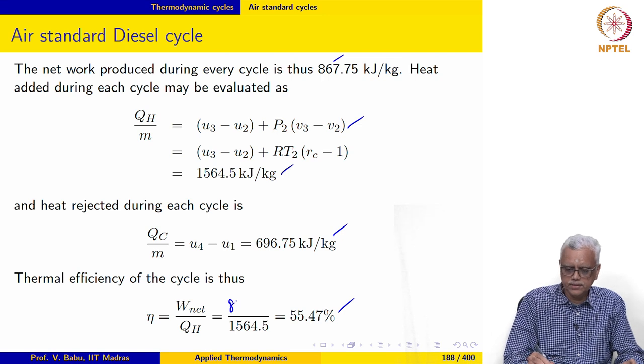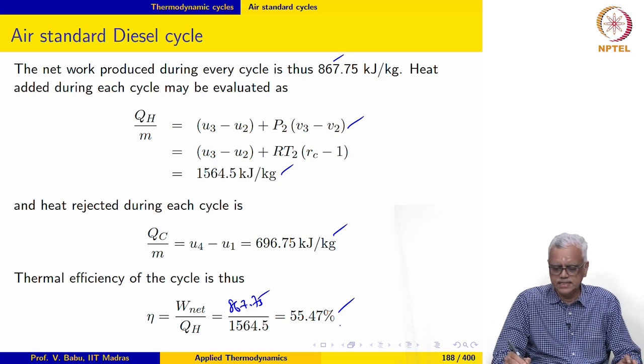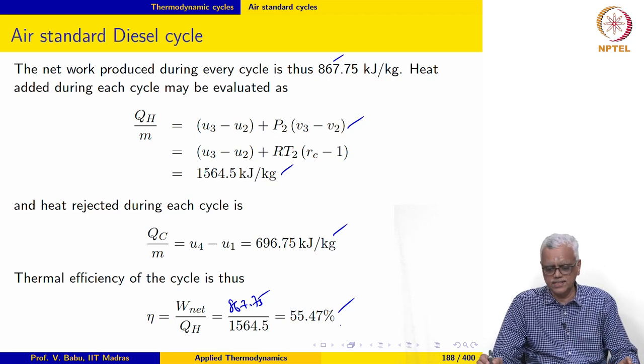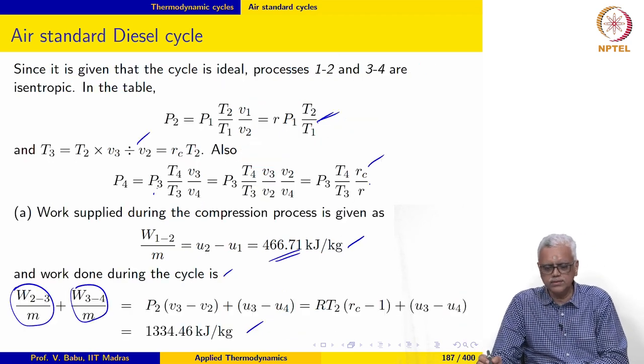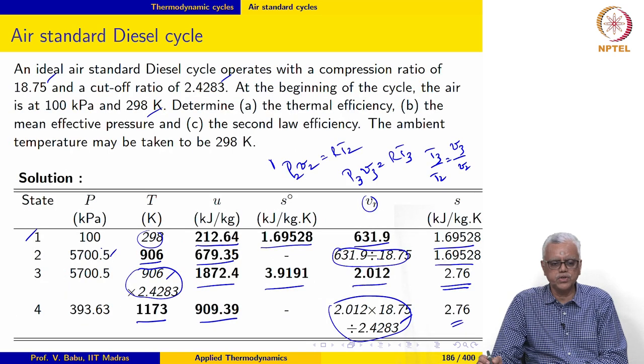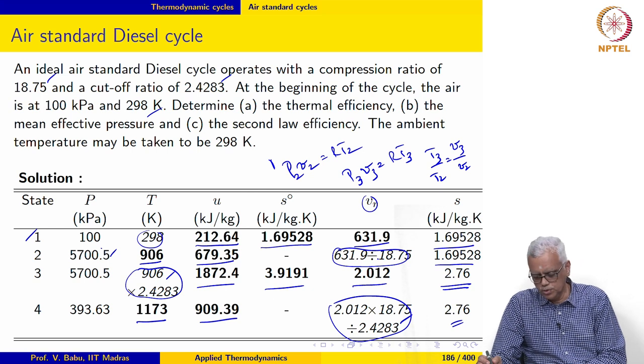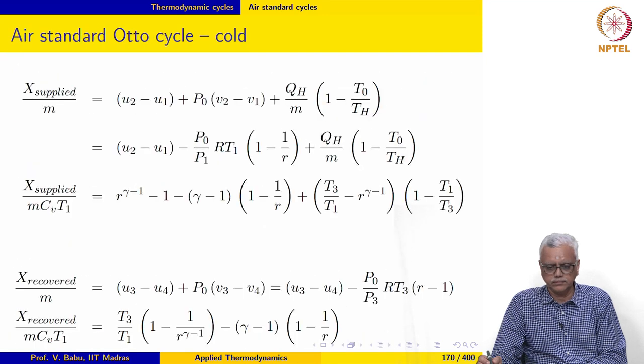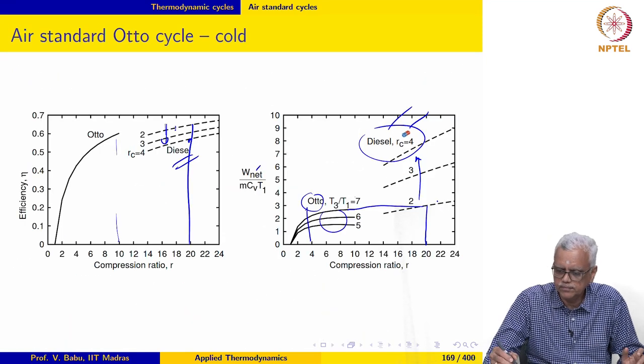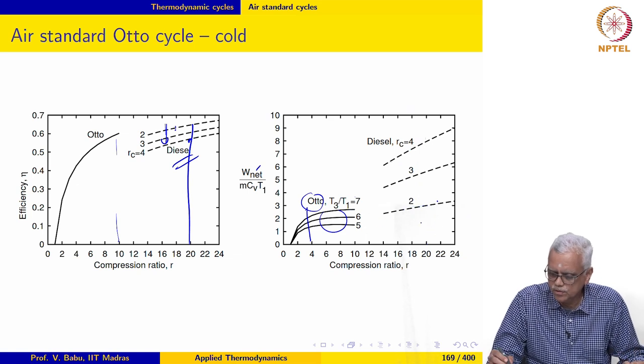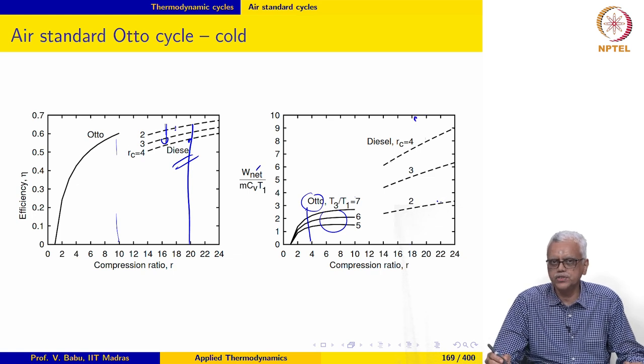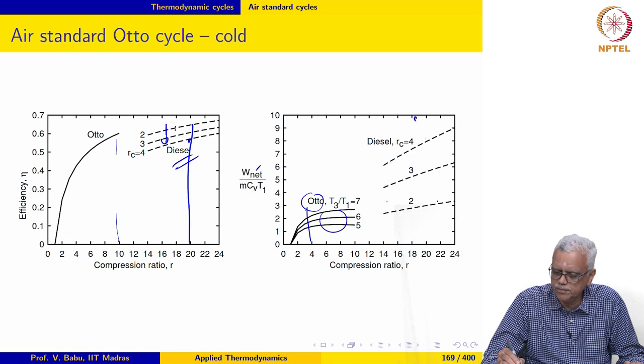I am sorry, this should be 867.75. Let us see how this compares with the value we would have obtained using a cold air standard analysis. Here the compression ratio is 18.75, cutoff ratio is 2.4283.